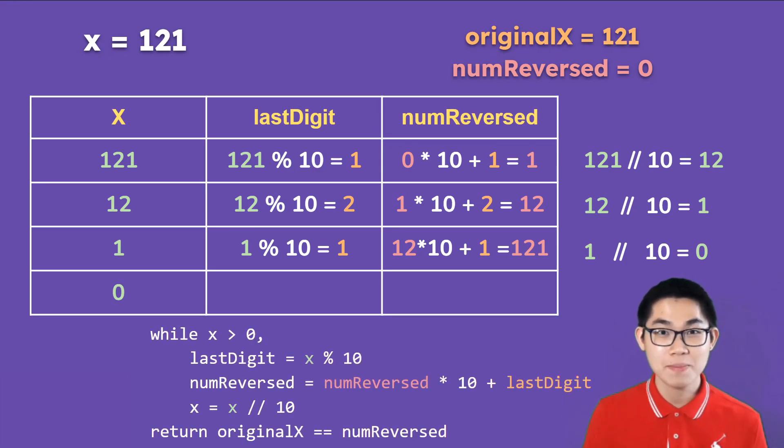So let's quickly talk about the pseudocode. While x is greater than 0, the last digit is just x modulus by 10. And then num reverse is just num reverse, and this num reverse is initially 0 times 10 plus the last digit. And then we get rid of the last digit, so just floor divided by 10. And after the while loop, x is going to be 0, and we just compare the original x with the num reversed.